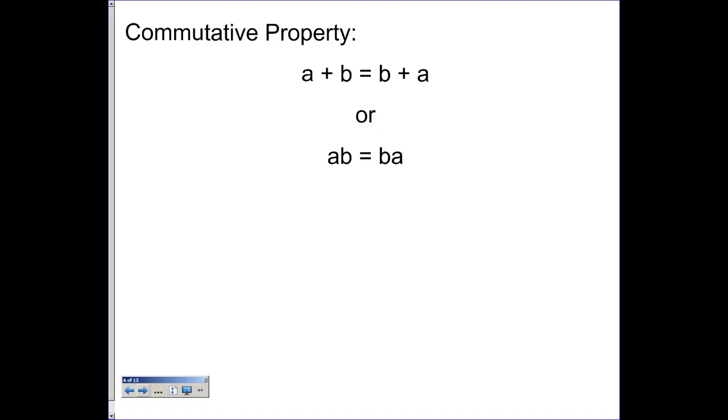The commutative property simply says you can reverse the order of addition or you can reverse the order of multiplication and you'll still get the same answer. So if we do 3 plus 5, which is 8,